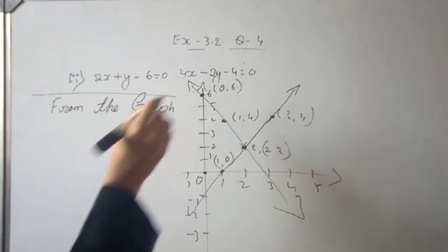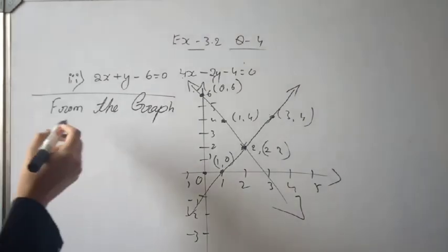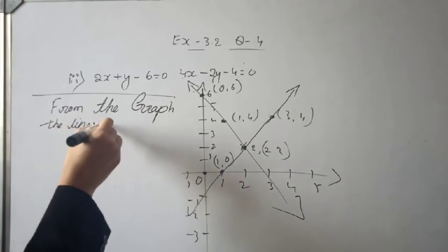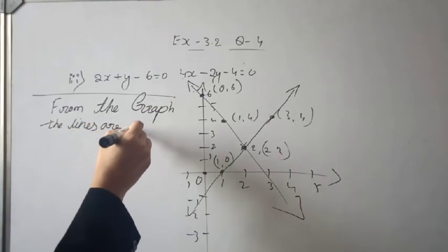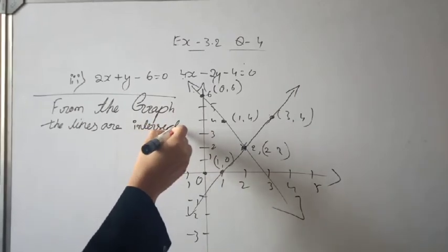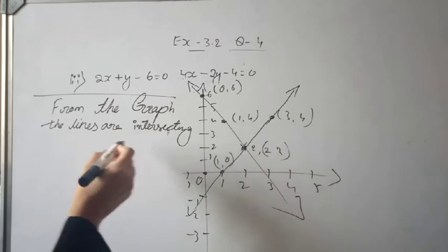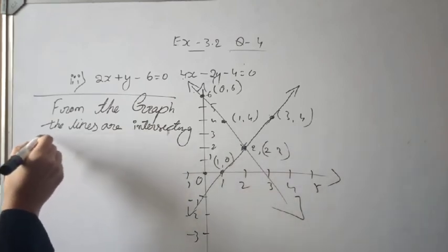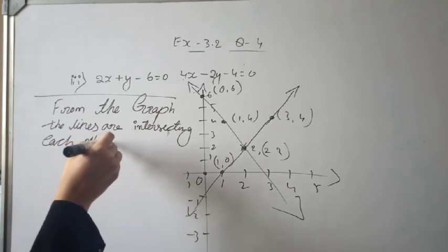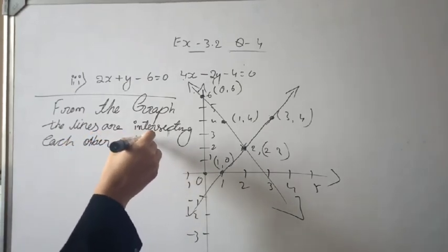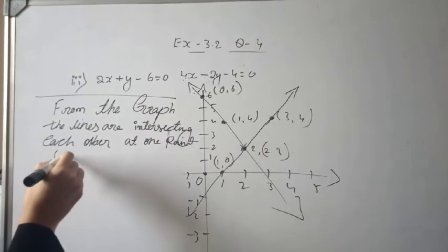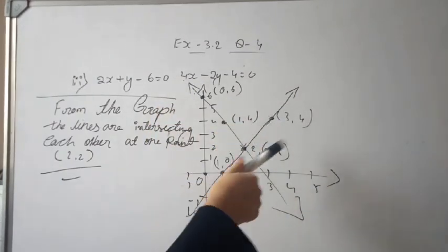From the graph, the lines are intersecting each other at one point. That one point is (2, 2). Therefore the solution is x equals 2, y equals 2. The two lines intersect each other at one point (2, 2), and this is the answer.